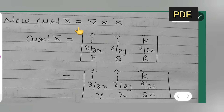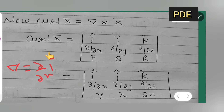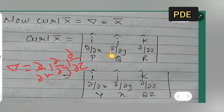Now we need to find the curl of X-bar, which equals del cross X-bar. We need to check if the curl of X is equal to zero. The del operator is (∂/∂x, ∂/∂y, ∂/∂z), and finding the curl means taking the cross product of the partial derivative operator with the vector.